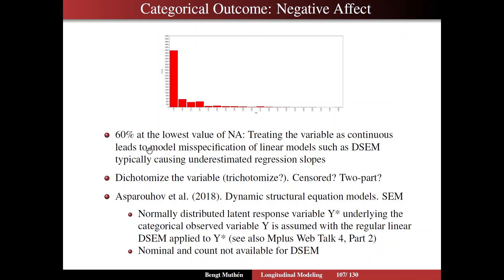In this case, maybe you should simply dichotomize the variable, or trichotomize it using three categories. Or maybe you should treat it as censored — a continuous variable that's censored at the lowest point. Or a two-part model, as described in M-Plus WebTalk 4, Part 2, where I go through two-part modeling for both continuous and categorical outcomes. But censored and two-part really do require a little bit more people out in the tail, so I don't think that's suitable in this case.